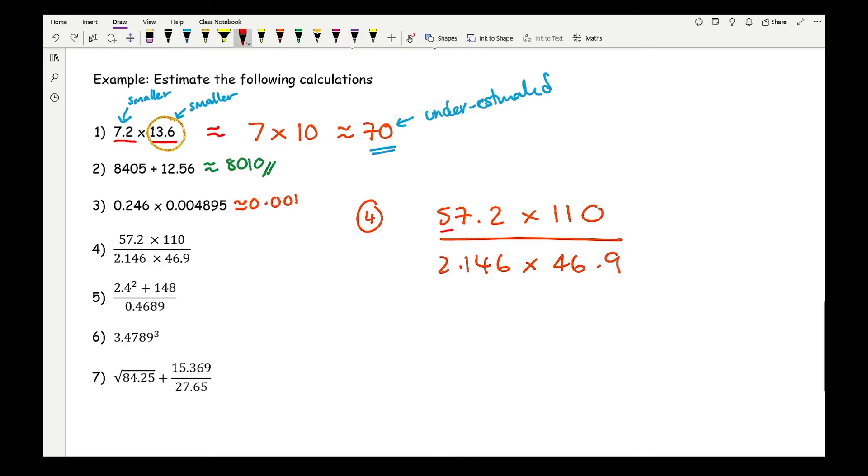With question 4, I've got 57.2 times 110 all divided by 2.146 times 46.9. So rounding these numbers up, this number here is going to be 60, this number here is going to be 100, this number here is going to be 2, and this number here is going to be 50.